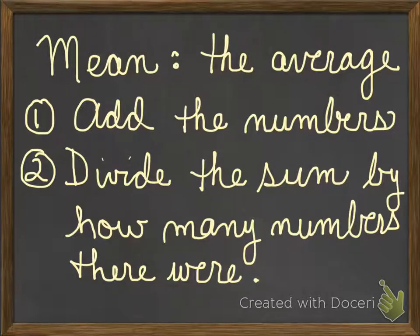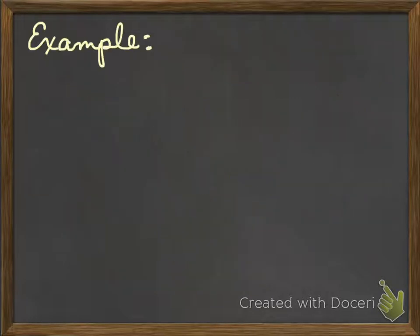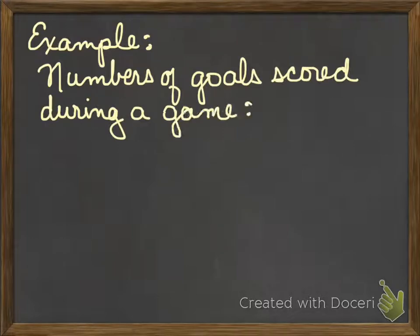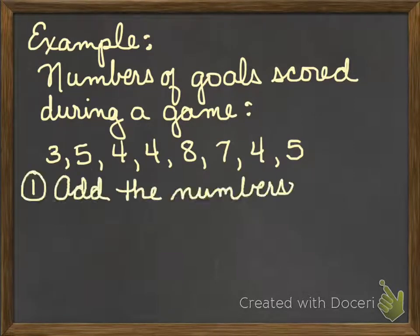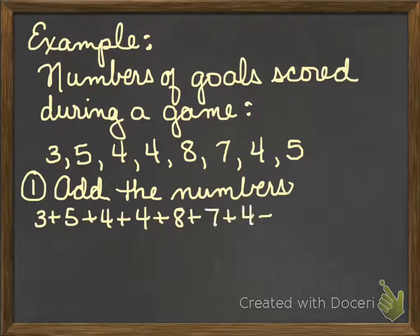So let's take a look at an example. Let's say that these are the numbers of goals scored during a game. The first thing that we're going to do is add up all these numbers. So I take my three plus five plus four, four, eight, seven, four, and five. And those are going to total up to be 40.